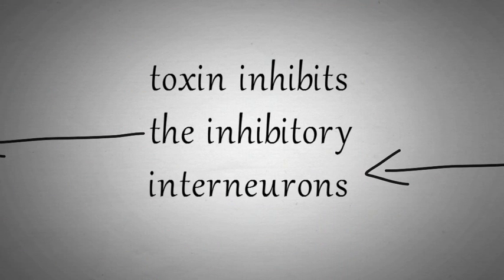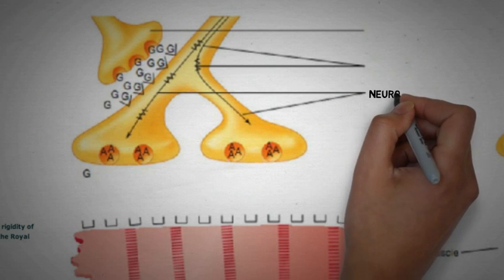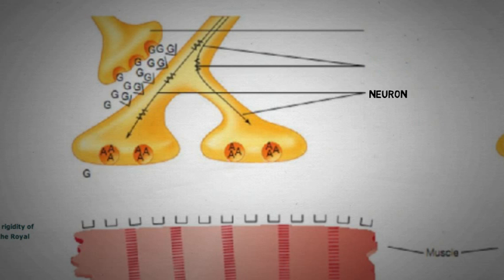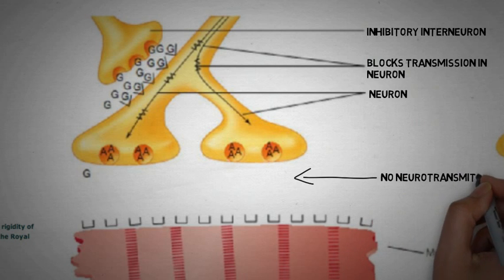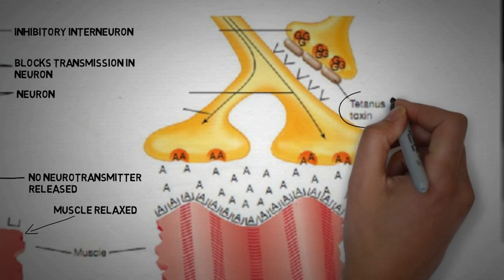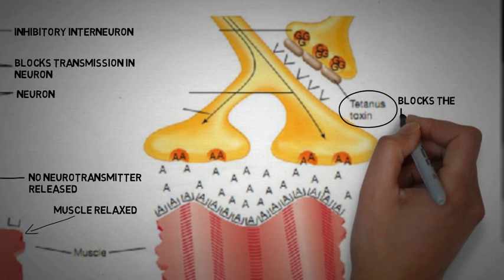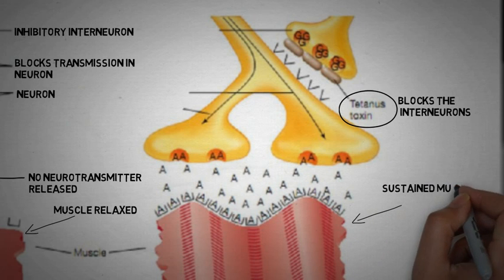For those who wish to know the exact mechanism of how the Tetanus toxin inhibits the inhibitory interneurons, here is more detail. The line diagram on the left side is that of a normal human being, while the line diagram on the right side belongs to a person with Tetanus. Under normal circumstances, the inhibitory interneuron blocks transmission in the neuron, so neurotransmitters are not released, resulting in muscle relaxation. But in a patient with Tetanus, the Tetanus toxin blocks the inhibitory interneurons, so there is no inhibition of the neuron, resulting in chronic excitation of the muscle and muscle contractions.